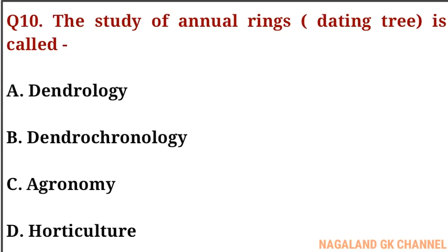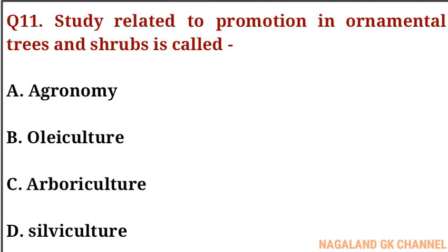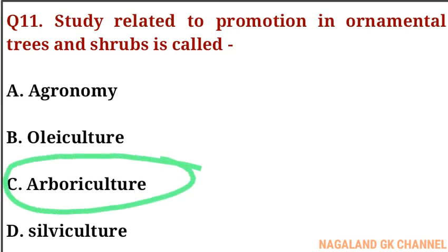Question number ten: the study of annual rings for dating trees is called what? The correct answer is option B, that is dendrochronology. Question number eleven: the study related to promotion of ornamental trees and shrubs is called what? The correct answer is option C, that is arboriculture.